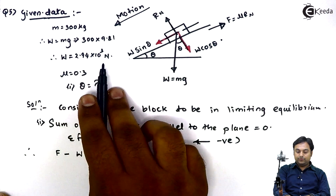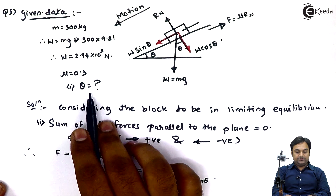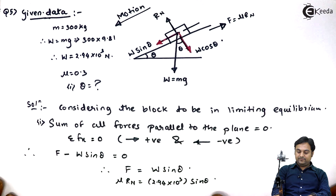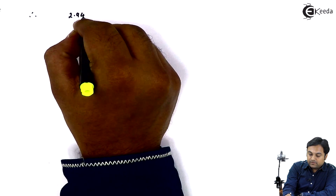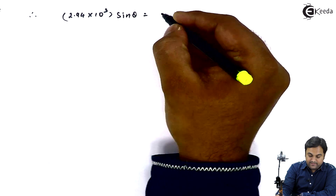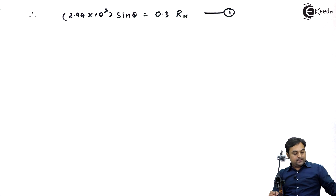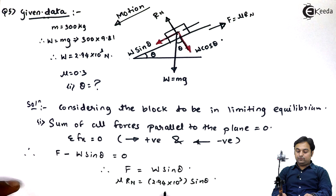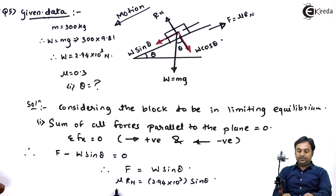So mu into Rn equals W which is 2.94 into 10 raised to 3 sin theta. Mu is given as 0.3, so therefore 2.94 into 10 raised to 3 sin theta equals 0.3 into Rn. I will keep this as equation number 1.